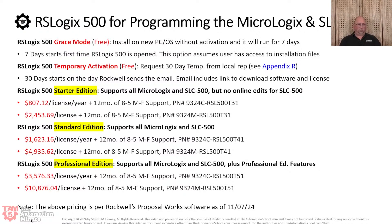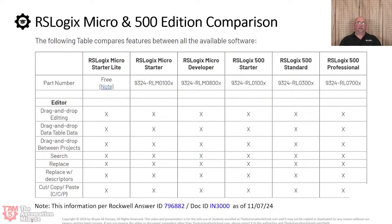Honestly, I don't know why these prices are so expensive. If you look at what competitors offer, people with more market share than Rockwell are selling their current software for less — and it supports their older models. In any case, let's go on to the comparison table. This is Answer ID 796882 or DocID IN3000 — you can search it on Rockwell's knowledge base. All you need is a free login to get a free comparison of all the different packages I've talked about.